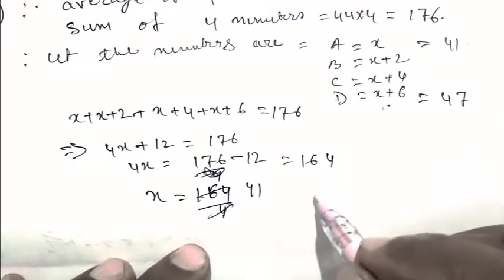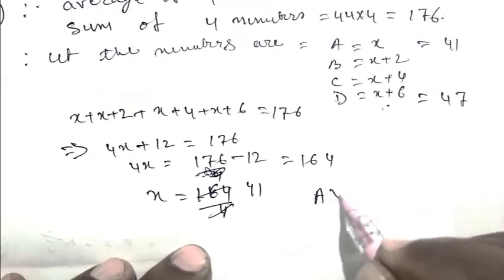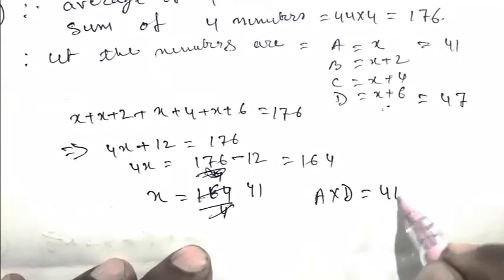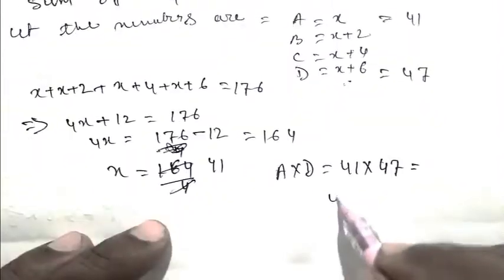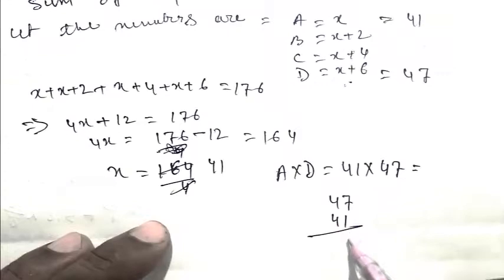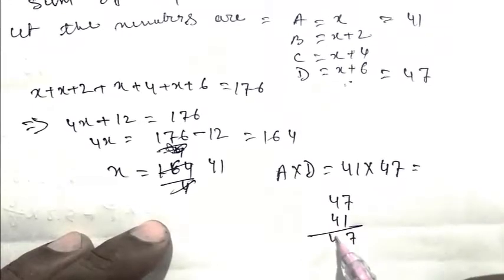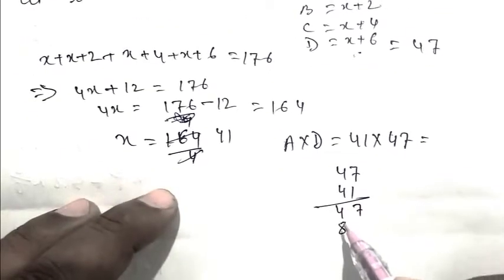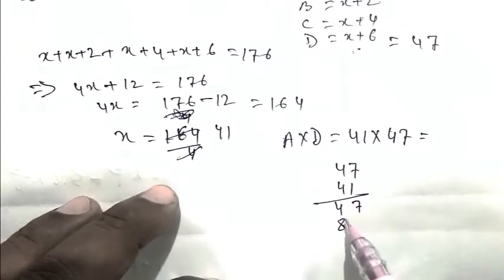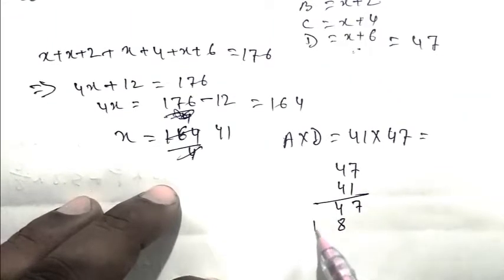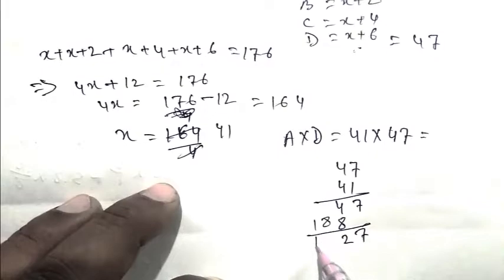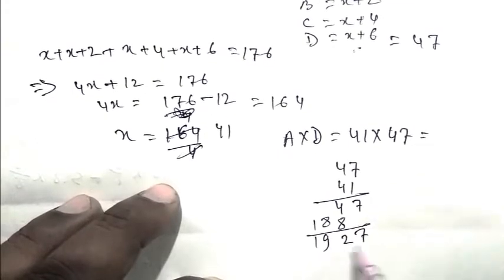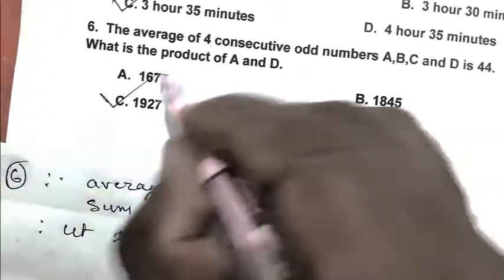So the product of A and D is 41 multiplied by 47, which equals 1927. So C is the right answer.